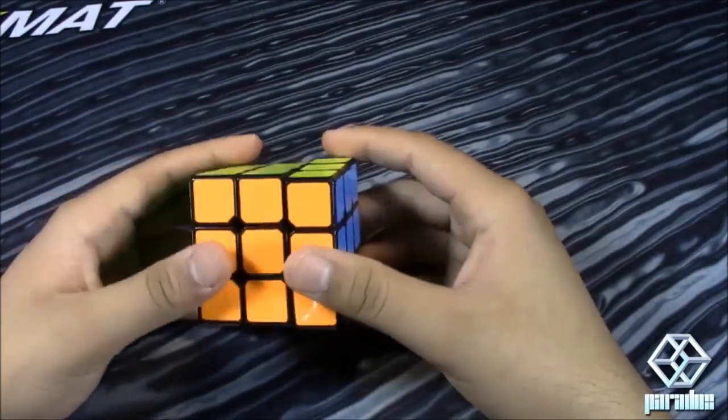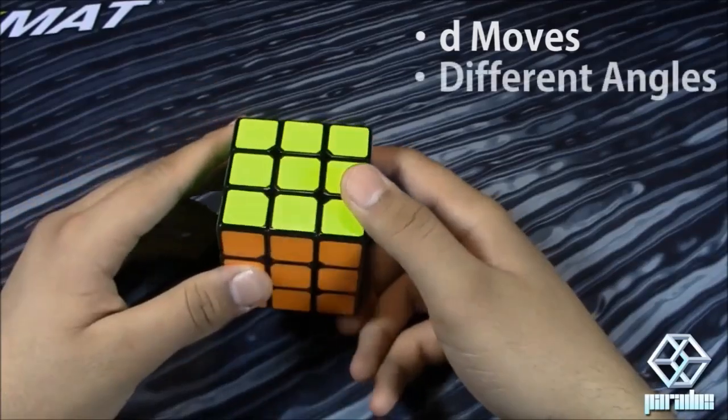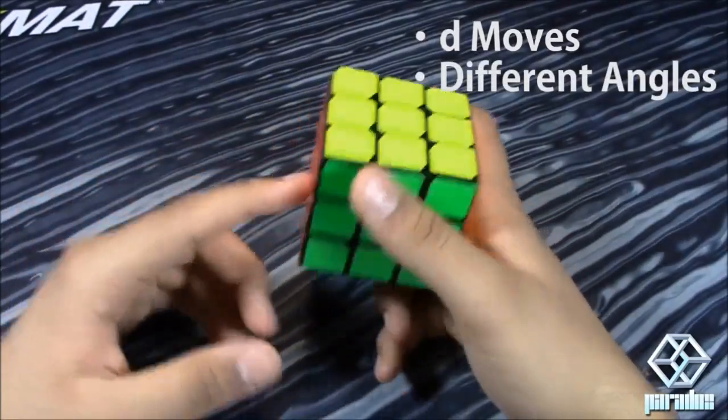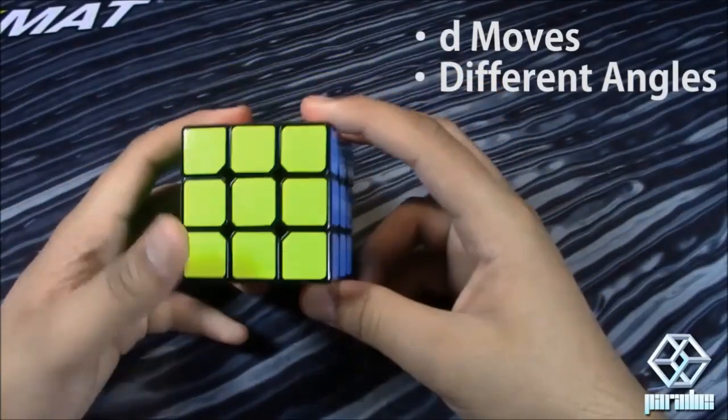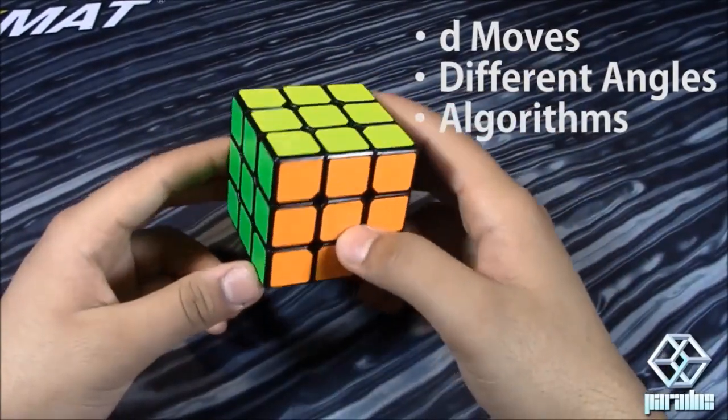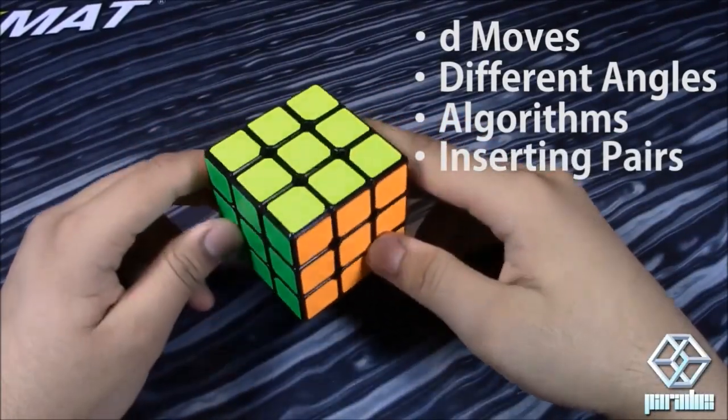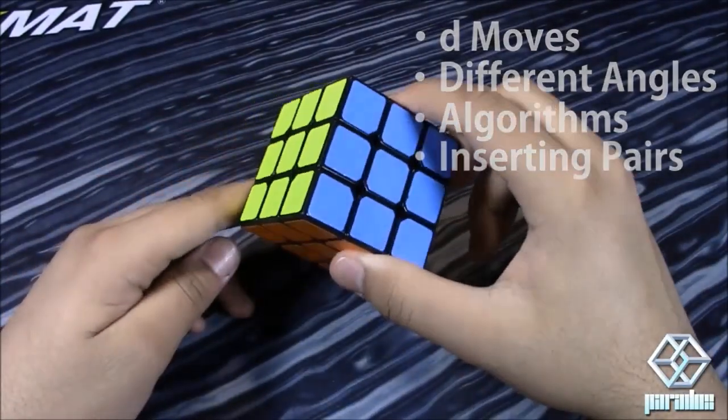You can do D moves, but in this case I'd recommend just doing a cube rotation. You can do that, you can do D moves, you can solve the case from a different angle without having to cube rotate to the angle that you're used to. You can learn an algorithm and you can use those other ways that I showed you to insert solved pairs without a cube rotation. So that's pretty much it for techniques you can use to reduce cube rotation.